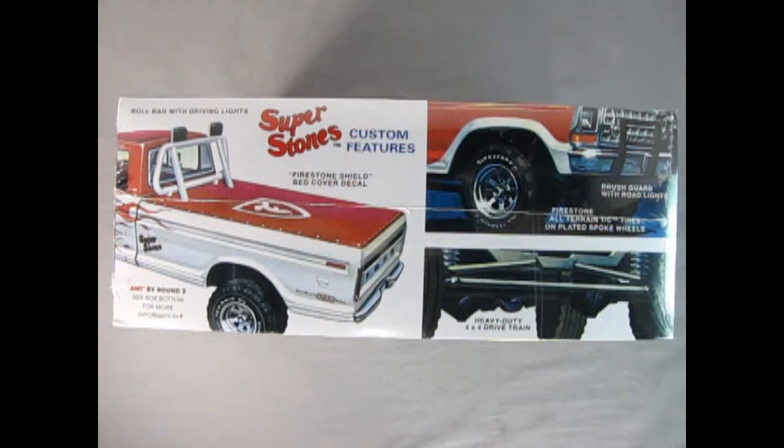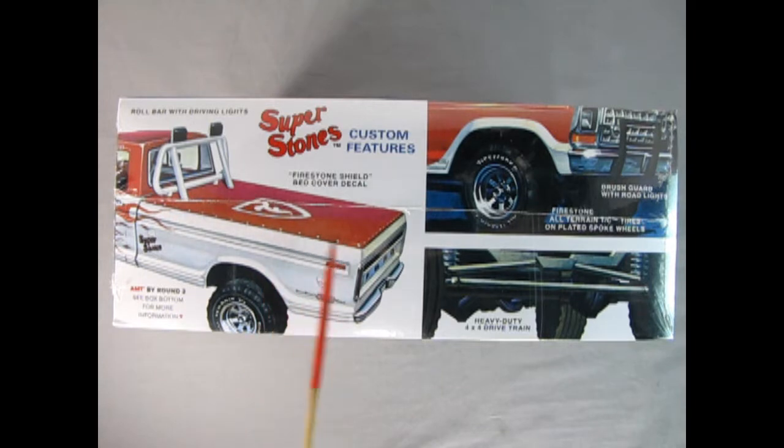On this side of the box we can see more of the features, like the roll bar with the driving lights, the Firestone shield bed cover decal, as well as the Firestone all-terrain tires mounted on plated spoke wheels, and the heavy-duty 4x4 drivetrain.